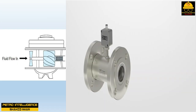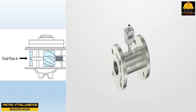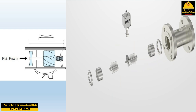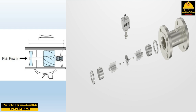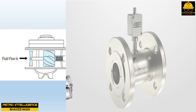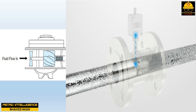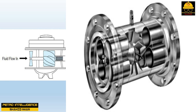Turbine flow meters usually consist of a section of pipe with a rotor mounted inside and a sensor on the outside. As fluid enters the turbine flow meter, the turbine blades begin to rotate; the speed of rotation is proportional to the velocity of the fluid. Flow velocity is the actual speed of the fluid measured as distance per unit time (e.g., feet per second), while flow rate is the total quantity of liquid passing a specific point measured as volume per unit time (e.g., gallons per minute). Turbine flow meters are accurate over a wide range of flows.